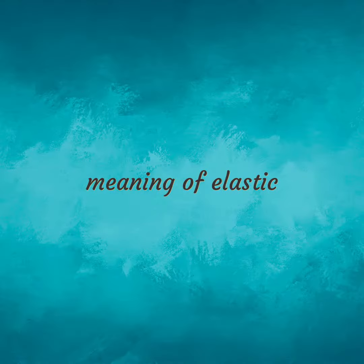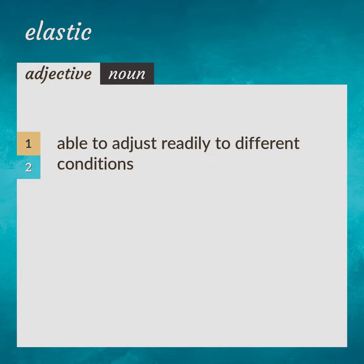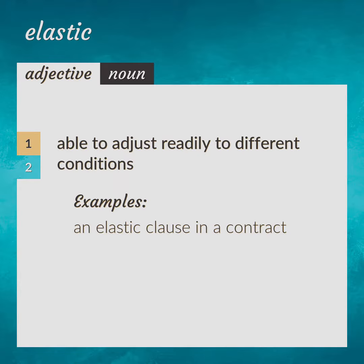Meaning of Elastic. Able to adjust readily to different conditions. For example: an elastic clause in a contract. Synonyms: flexible, pliable, pliant.